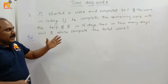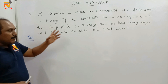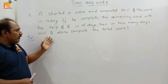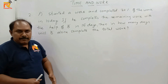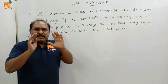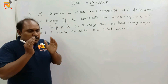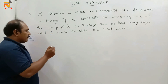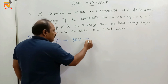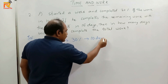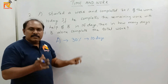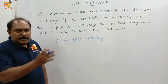A started a work and completed 30% of the work in 10 days. If he completes the remaining work with the help of B in 15 days, then in how many days will B alone complete the total work? Here our values are given in percentage, so we can assume the total work is 100%. In 10 days A completes 30%, so A in one day will be doing 30 divided by 10, that is 3% of the work.